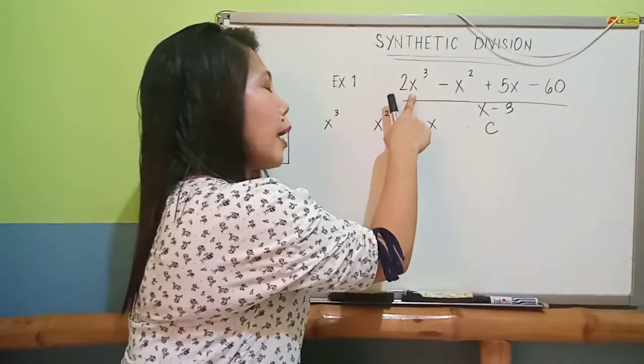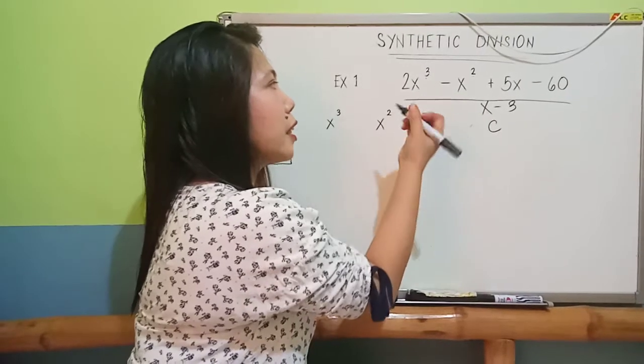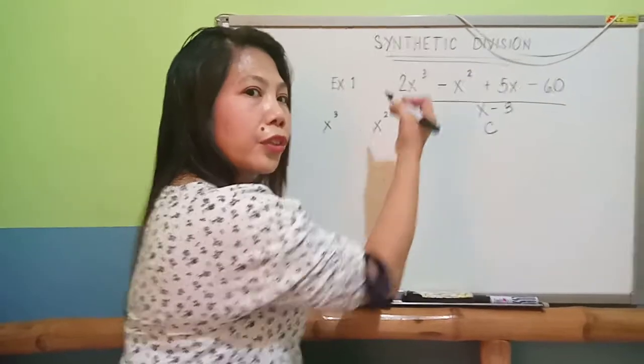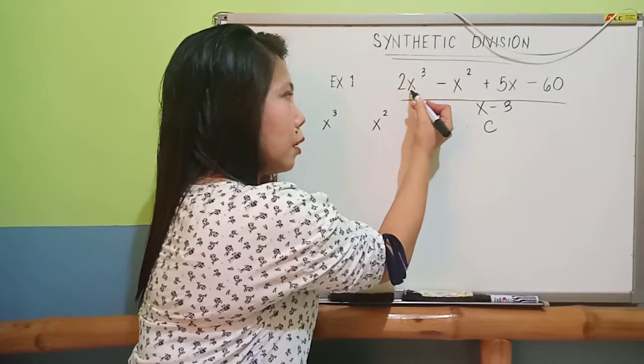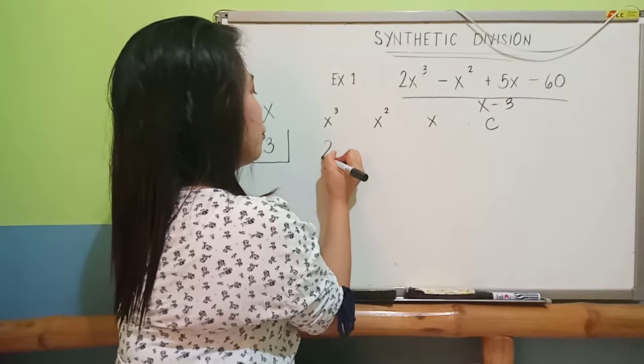On your x cube, what is your coefficient? The coefficient is the number adjacent to the variable. The number adjacent to your x cube is 2. So, you just have to write 2.